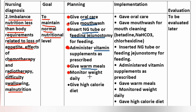Implementation: gave oral care, gave mouthwash for mouth cleaning, for example betadine, sodium bicarbonate, or chlorhexidine mouthwash. Inserted NG tube or fed via gastrostomy. Administered vitamin supplements as prescribed. Gave warm meals via NG tube or gastrostomy. Monitored weight daily. Gave high calorie diet.